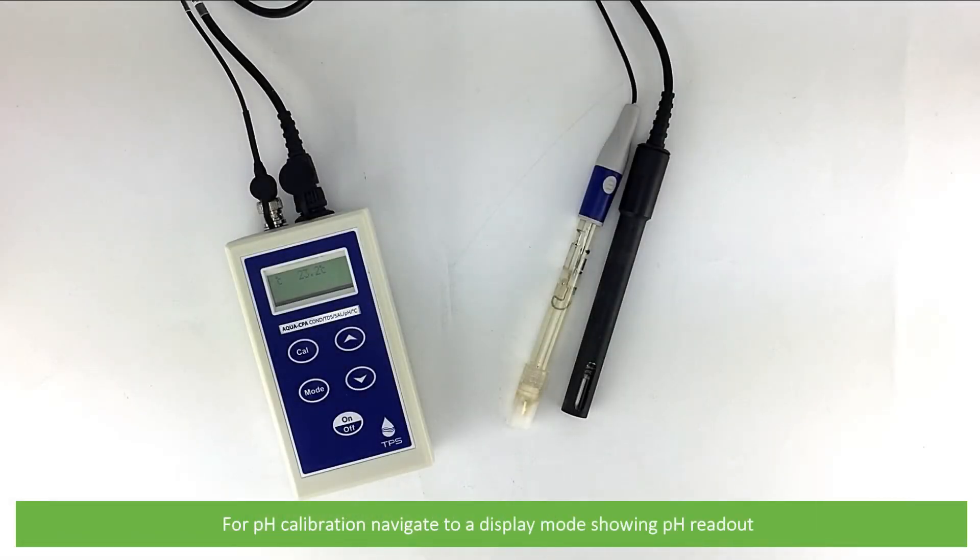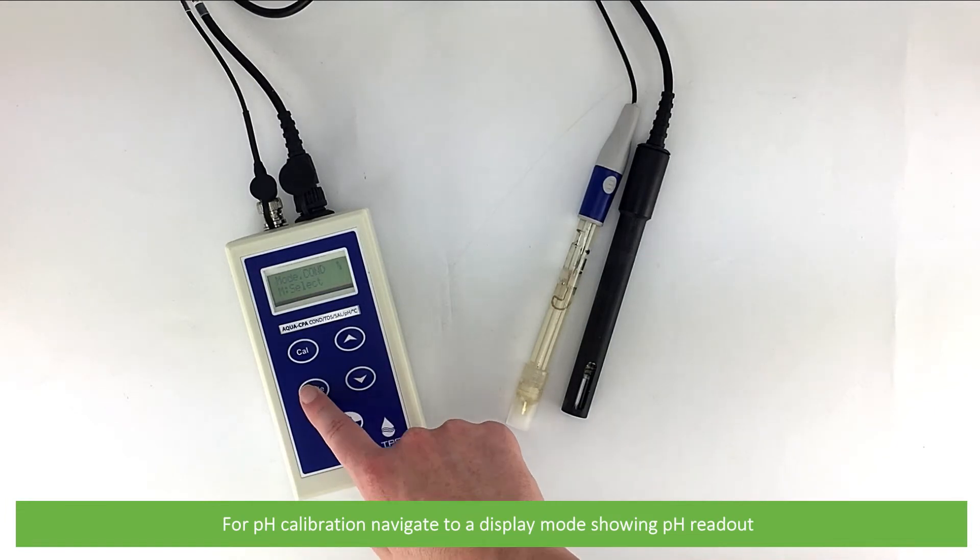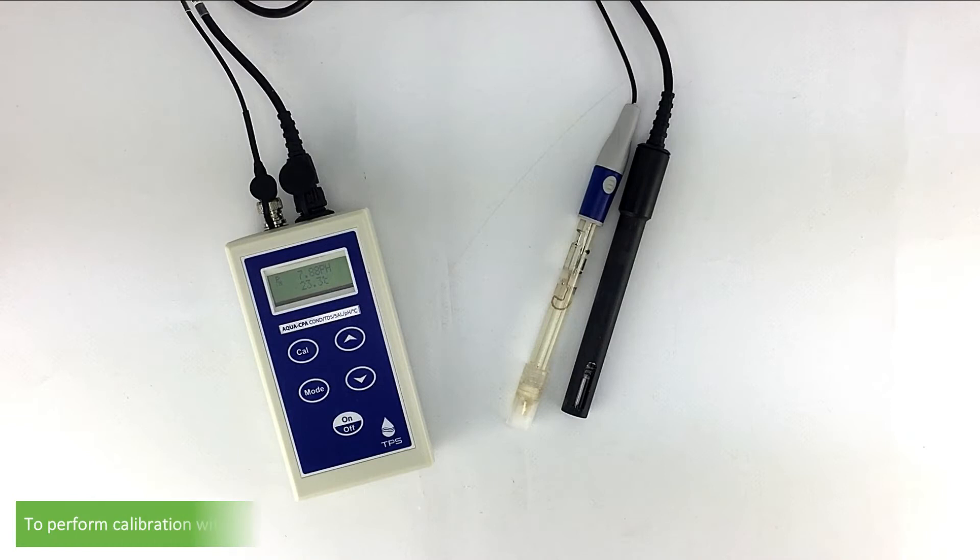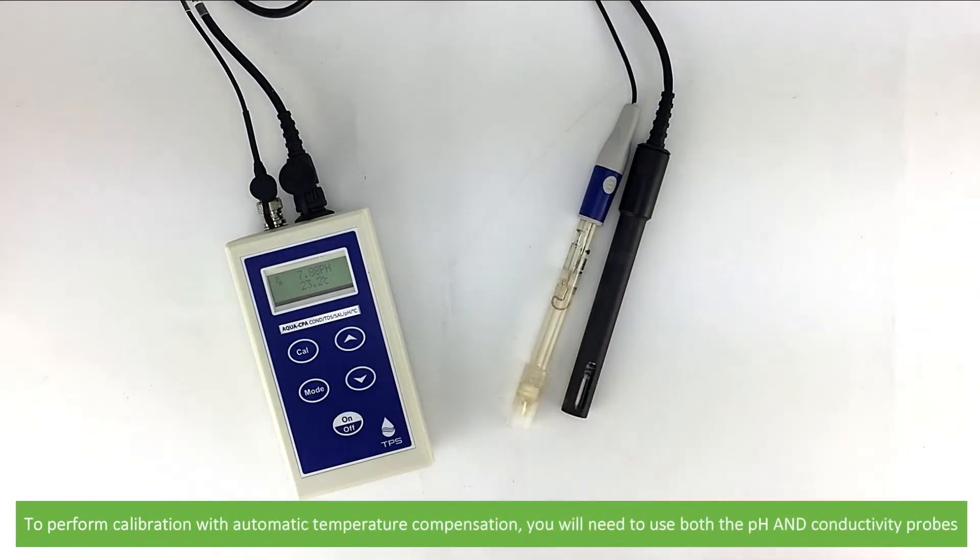For pH calibration, navigate to a display mode showing pH readout. To perform calibration with automatic temperature compensation, you'll need to use both the pH and conductivity probes.